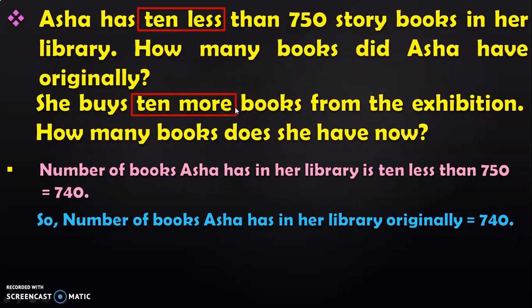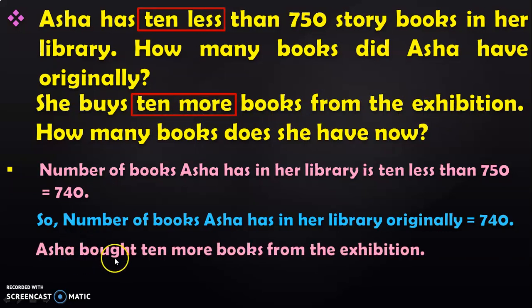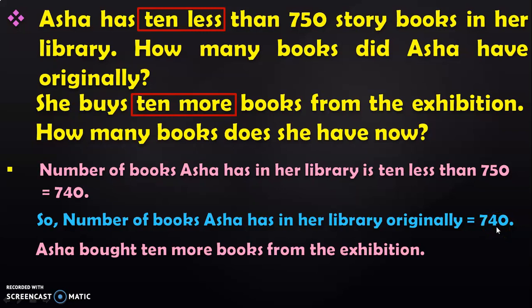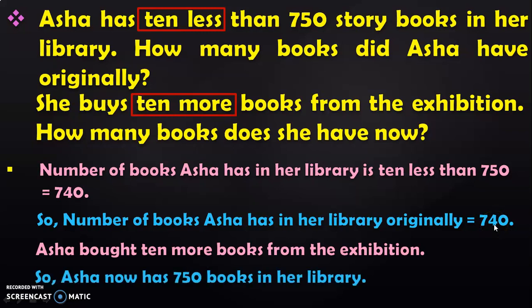Now let us move on to the next part of the question. She buys 10 more books from the exhibition, so write down that information: Asha bought 10 more books. Now we have to find 10 more than 740. To find 10 more than a given number, we look at the tens place and add 1 to it. We have 4 in the tens place, so adding 1 gives us 5, and the answer is 750. So Asha now has 750 books in her library.